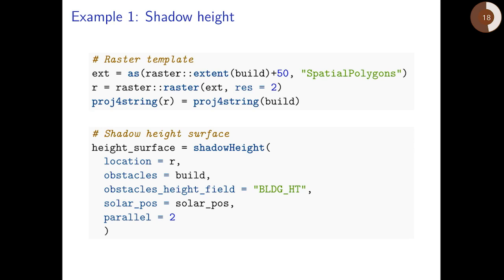Instead of calculating shadow height for individual point or points we can create a continuous shadow height surface. To do that we need to provide a raster template. For example, in this first code section we create a raster template covering the extent of the buildings layer plus 50 meters buffer at the resolution of 2 meters.